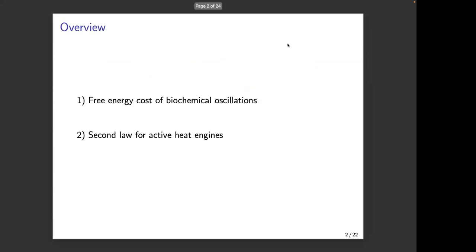I'll talk about two different topics. One is the cost of precise biochemical oscillations — something I have been working on for about five years. The other topic is active heat engines, which is something I just started working on. The first part concerns finding a relation similar to the thermodynamic uncertainty relation, but the precision here is the number of coherent oscillations, not the epsilon squared from the thermodynamic uncertainty relation.